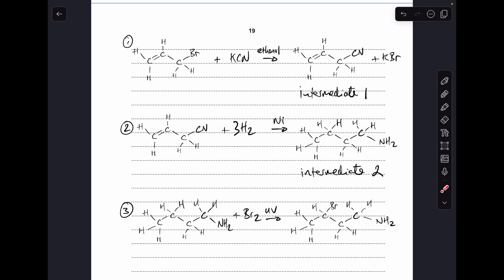And then from intermediate two, which is this here, to that product: bromine and UV.